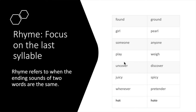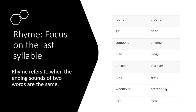Play, weigh — "ay" is the last syllable. Here it's spelled differently — A-Y or E-I-G-H — but sounds the same. Play and weigh. Uncover, discover — "er" is the last syllable, but these two words actually rhyme even more because they have multiple syllables that rhyme: "cover, cover." Uncover and discover rhyme. Juicy, spicy — "see" is that last syllable. Whenever, pretender — unlike uncover and discover, we're just looking at that ER sound at the end. So even though it's not "ever" and "ender," that ER sound rhymes, so we could say that these two words rhyme.